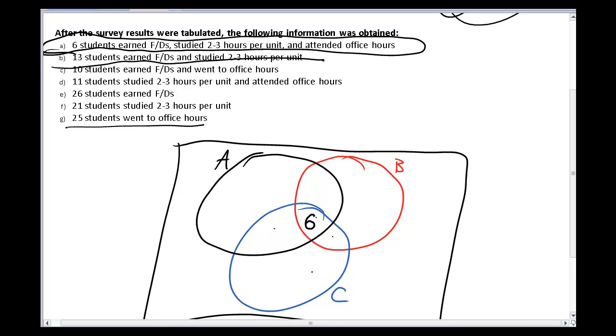Next, I know that 13 students earned F and Ds and studied appropriately. Remember, B was my appropriate studying question. So that tells me that there's 13 students in this region here. But of those 13, six of them are also part of coming to office hours. So 13 minus 6 gives me the seven people who are just earning Fs and Ds and they're studying 2-3 hours per unit, but they're not part of the total 13 because these seven don't come to office hours.